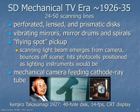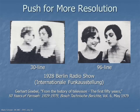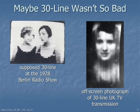What might today be called the standard definition of mechanically scanned television lasted roughly 10 years, from about 1926 to about 1935. Different forms of rotating components were used. In Japan, Kenjiro Takayanagi used a mechanically scanned camera but an electronic picture tube display. Even back in the 1920s, there was a push for more spatial resolution. This comparison of 30-line and 96-line images was offered at the 1928 Berlin Radio Show, the ancestor of today's Internationale Funkausstellung. Perhaps the people pushing 96-line pictures made the 30-line look worse than it really had to, based on this off-screen photograph of an actual 30-line broadcast in London.